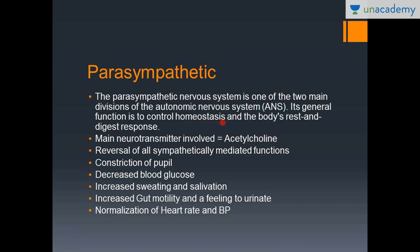The parasympathetic nervous system, in general, just reverses whatever the sympathetic does. It constricts the pupil, decreases blood glucose, increases sweating and salivation, increases the vegetative functions — basically increases digestion. It normalizes the heart rate and blood pressure. So basically it maintains the body in homeostasis and maintains the body's rest and digest response — increased gut motility, feeling of urination, all the vegetative functions increase. Blood glucose utilization is decreased. So everything just normalizes with the parasympathetic nervous system.